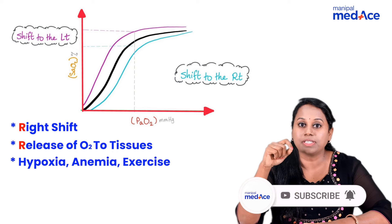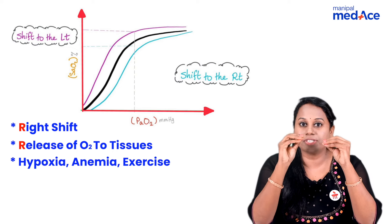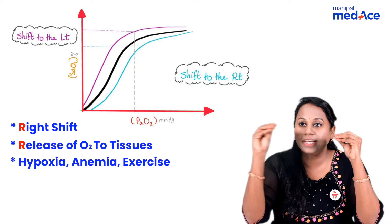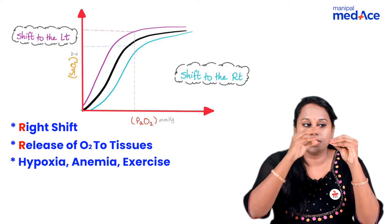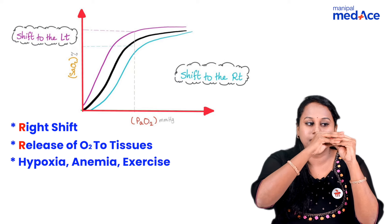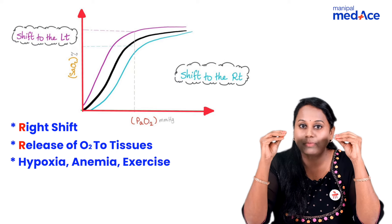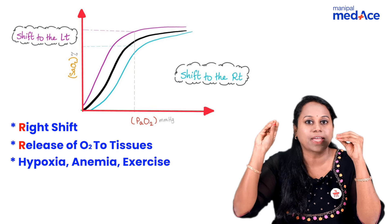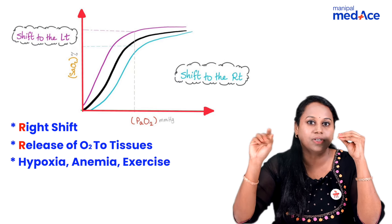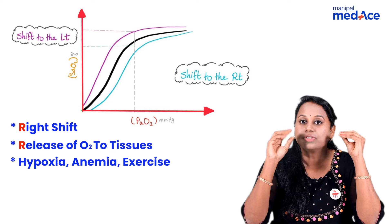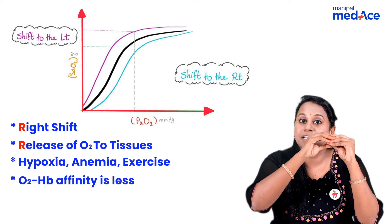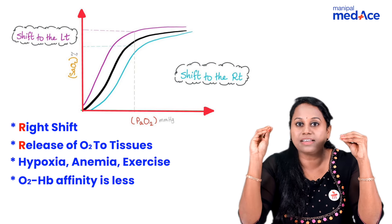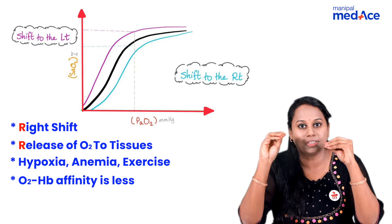When you say oxygen is released to the tissue, it means if this is hemoglobin, oxygen is removed from hemoglobin and then released to the tissues. So, oxygen-hemoglobin affinity is less in right shift of the curve.